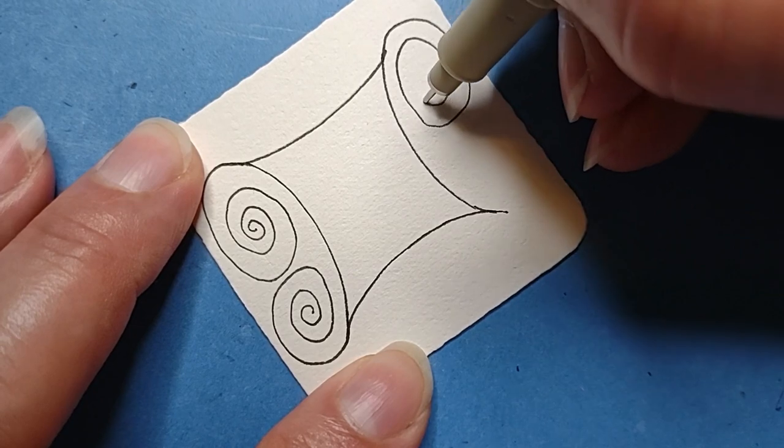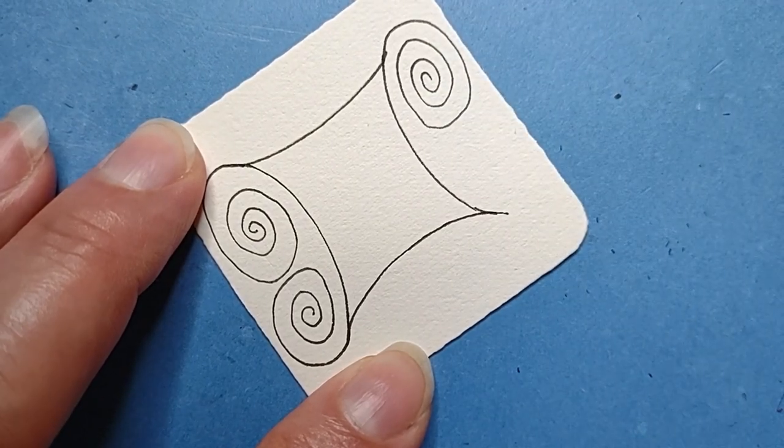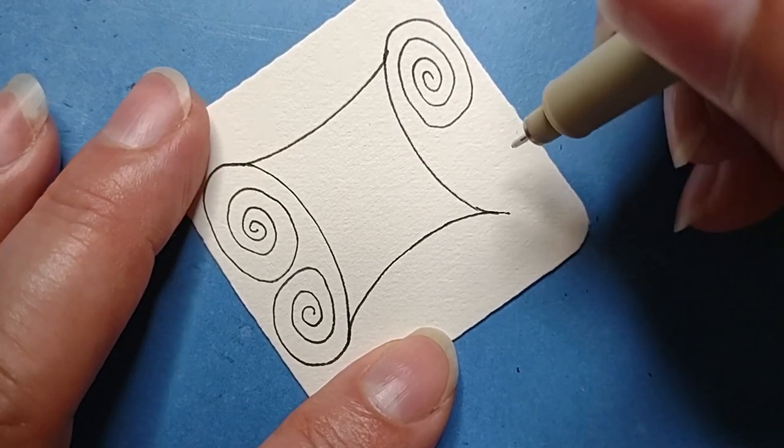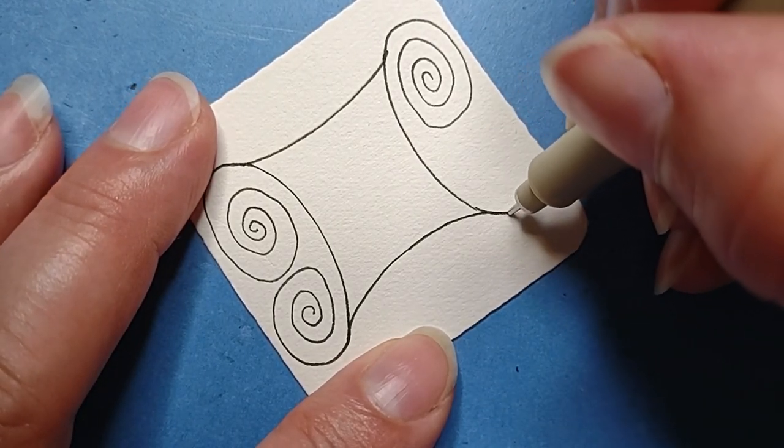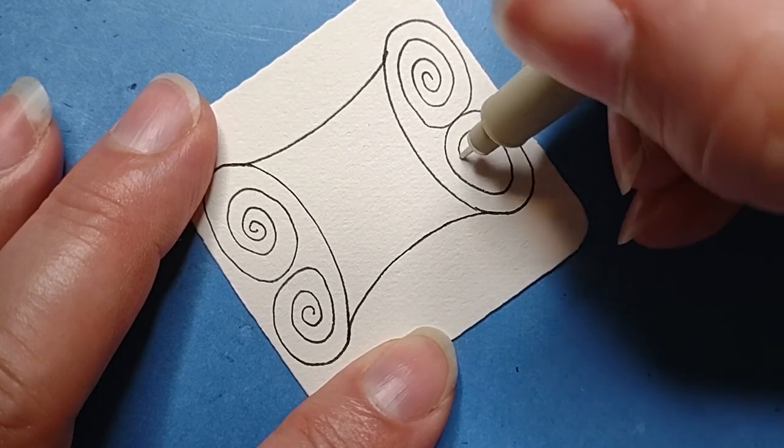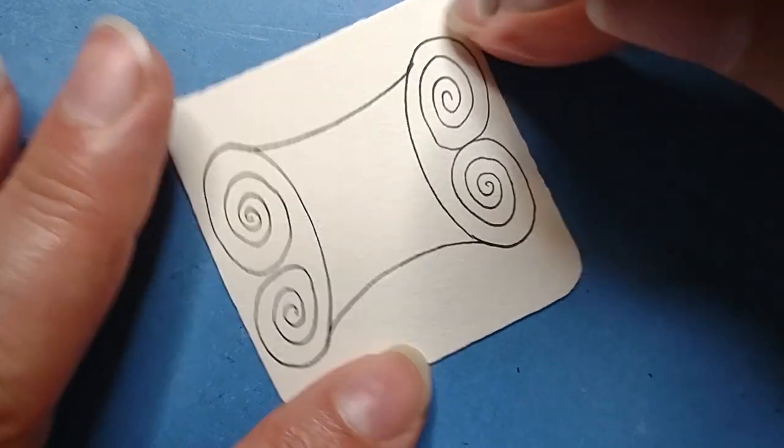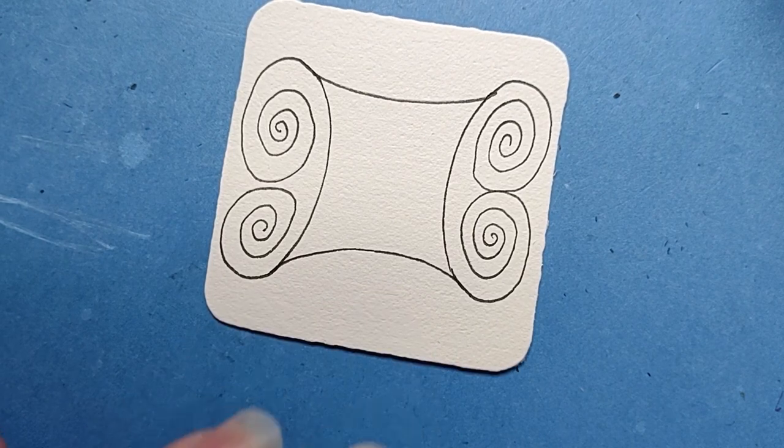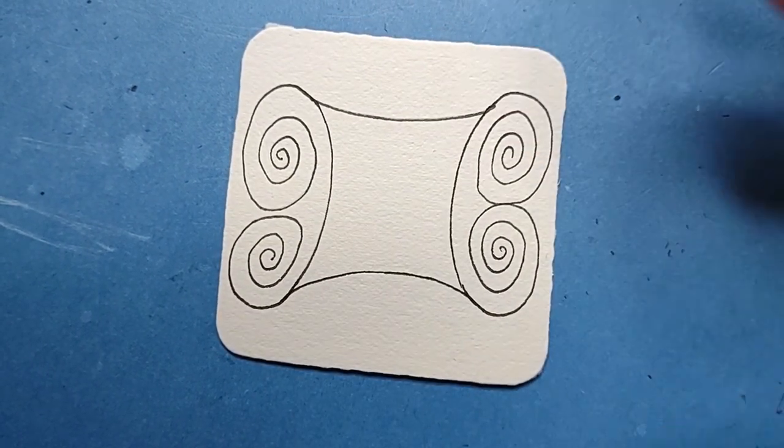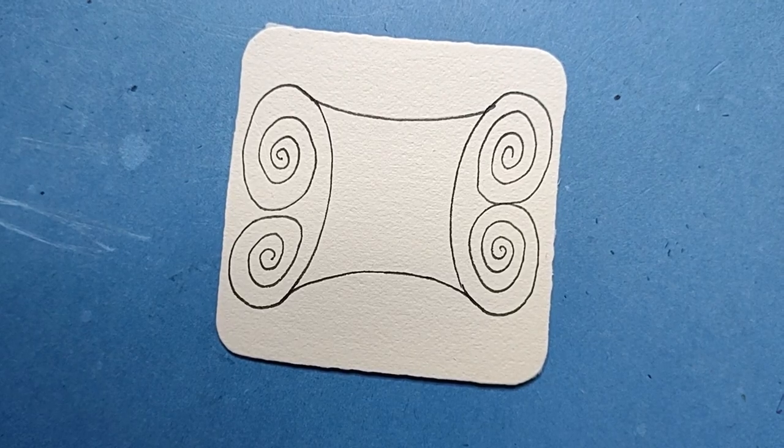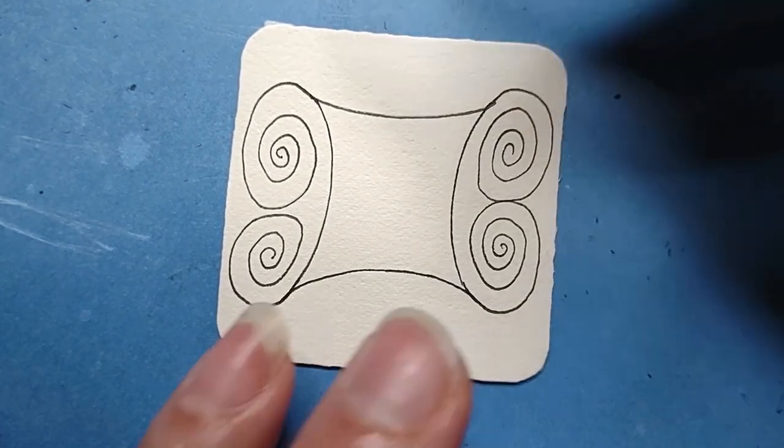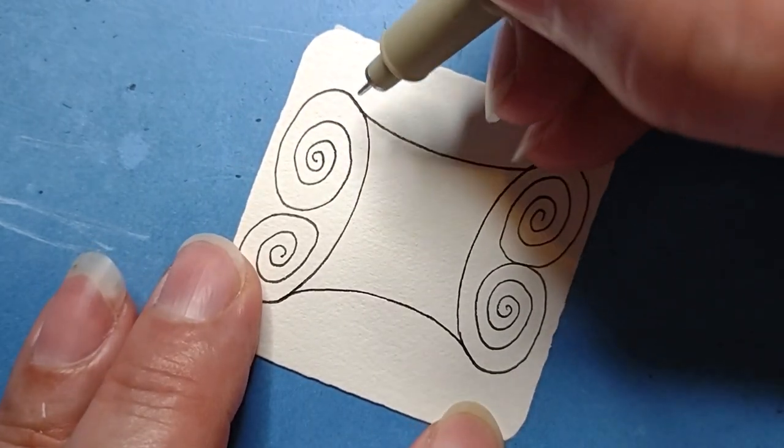Then I'm just going to flip to the opposite side, and same thing. This time paying a little bit more attention to where I want the middle of that. And I'm kind of doing mine sort of squatty-ish. And then here again, and so you can do your spirals however you want them.